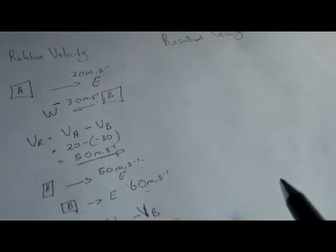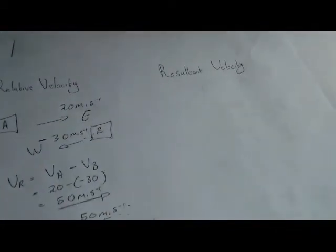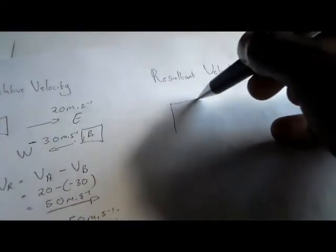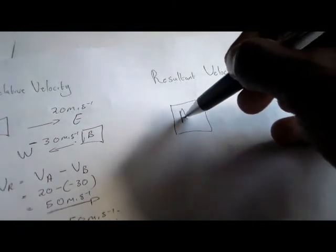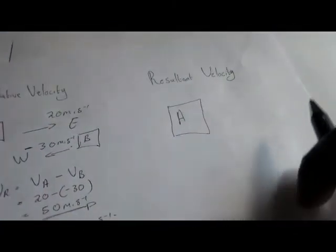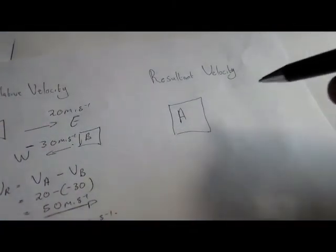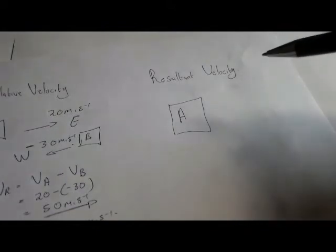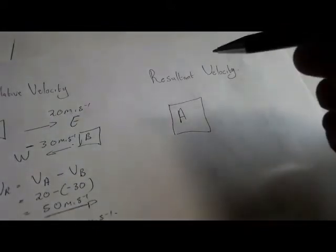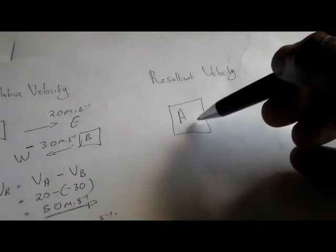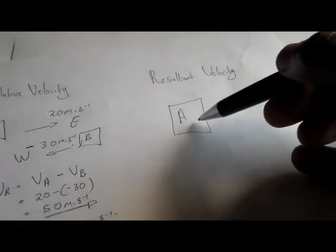Unlike relative velocity, in resultant velocity we are only concentrating on one body. Let's say we have body A — in this body there will be two or more velocities acting on it.